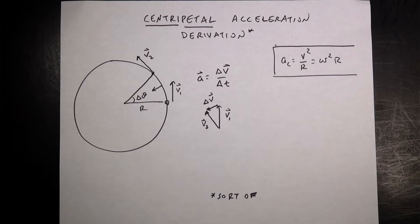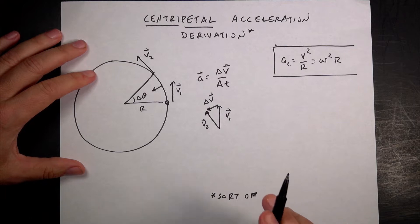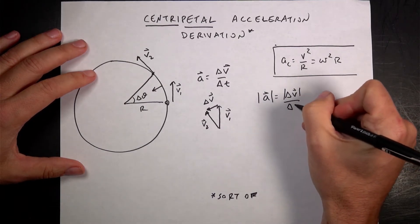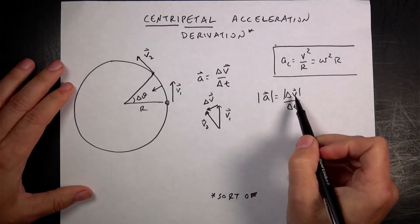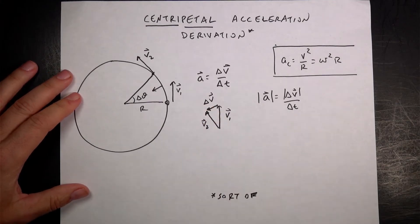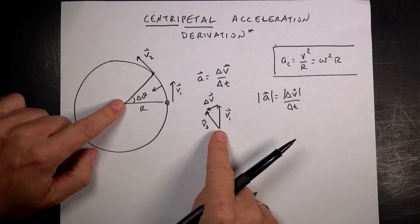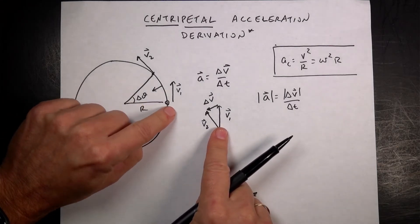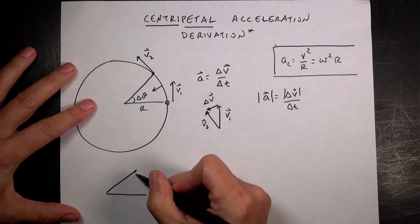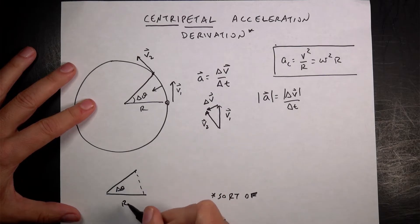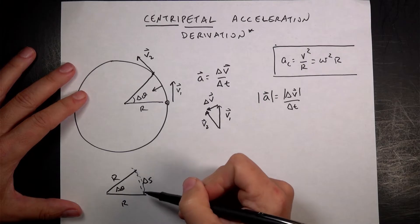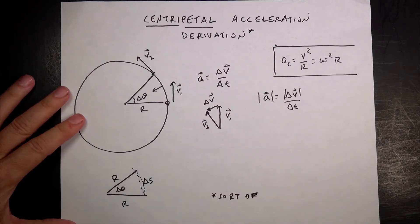Now we want to find the magnitude of this acceleration. The magnitude of the acceleration equals the magnitude of delta v over delta t — delta t is a scalar so I don't need to take its magnitude. I can't take the magnitude of delta v using the speed change because that's zero; the speed doesn't change. So I'm going to draw two triangles. The first one: this is delta theta, that's r, that's also r, and this is the arc length I'll call delta s. You can imagine that arc is actually curved, but since delta theta is really small, the arc and the chord are essentially the same.